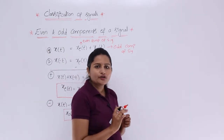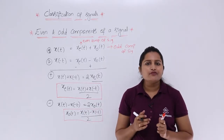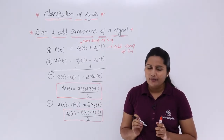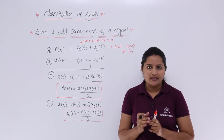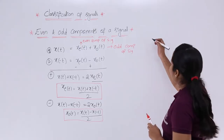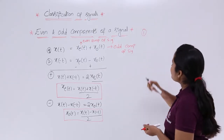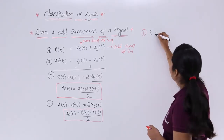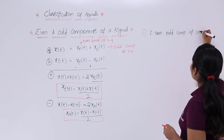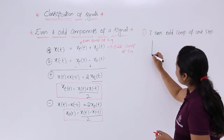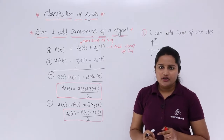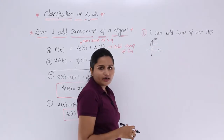For example, if you want to calculate the even and odd components of the unit step signal, how will it be? This topic is very important for technical exams like the GATE exam — they will ask questions like: what are the even and odd components of the unit step signal? The unit step signal u(t) satisfies: u(t) = 1 when t ≥ 0, and u(t) = 0 when t < 0.